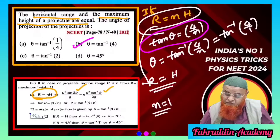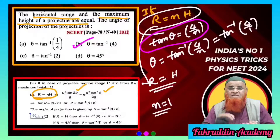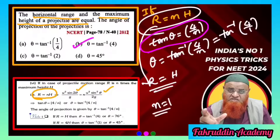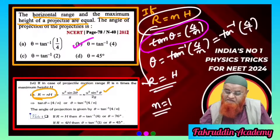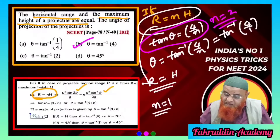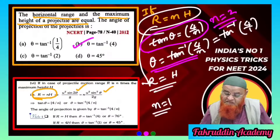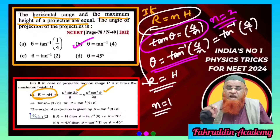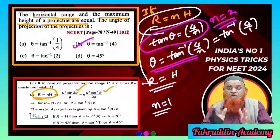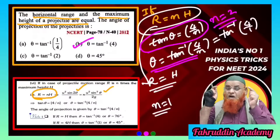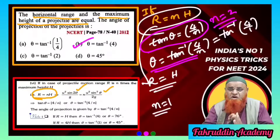Remember the universal formula tan θ = 4/n. If the range is double the height, then n = 2, and θ = tan⁻¹(4/2) = tan⁻¹(2). This formula works for all such projectile models.